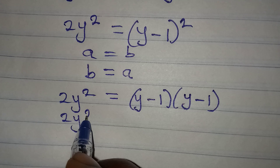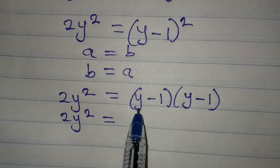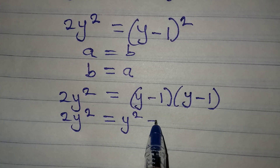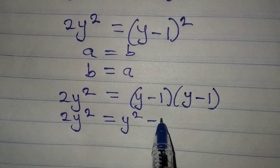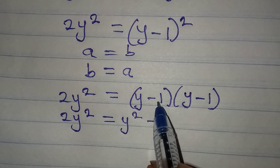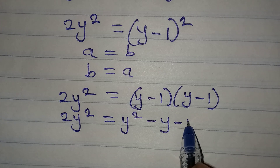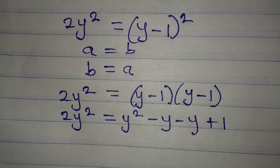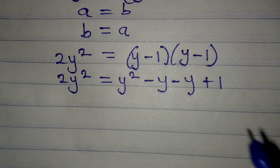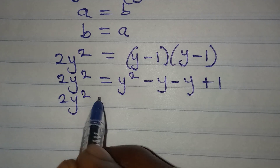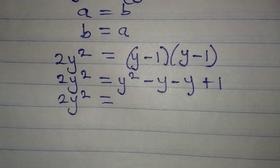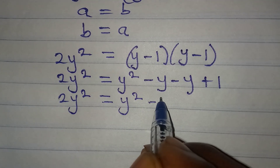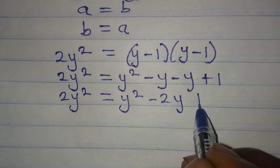So 2y² = (y - 1)(y - 1). Expanding: y times y gives y², y times negative 1 gives negative y, negative 1 times y gives another negative y, and negative 1 times negative 1 gives positive 1. So 2y² = y² - 2y + 1.